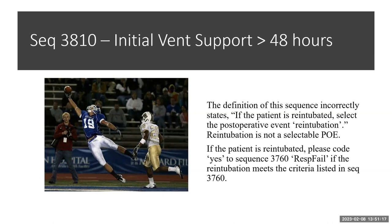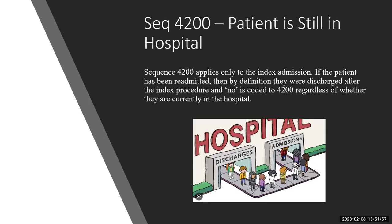Sequence 3810 — Initial Ventilator Support Greater Than 48 Hours: the definition incorrectly states 'if the patient is re-intubated, select the post-operative event re-intubation,' but re-intubation isn't a selectable post-operative event. You would choose 'Respiratory Failure,' which is sequence 3760, for re-intubations if it meets the criteria defined in the training manual. Sequence 4200 — Patient Still in the Hospital: this sequence only applies to the index admission. If your patient has been readmitted, code 'No' to 4200 because they have left the hospital — it applies only to that index admission.